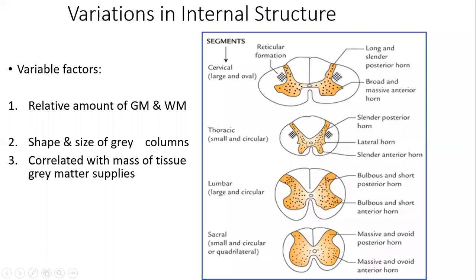Why do variations exist in the internal structure of the spinal cord at different levels? There can be differences between cervical segments of the spinal cord in comparison to thoracic, sacral, and coccygeal segments. There are some variable factors associated with the spinal cord because of which such variations exist at different levels.